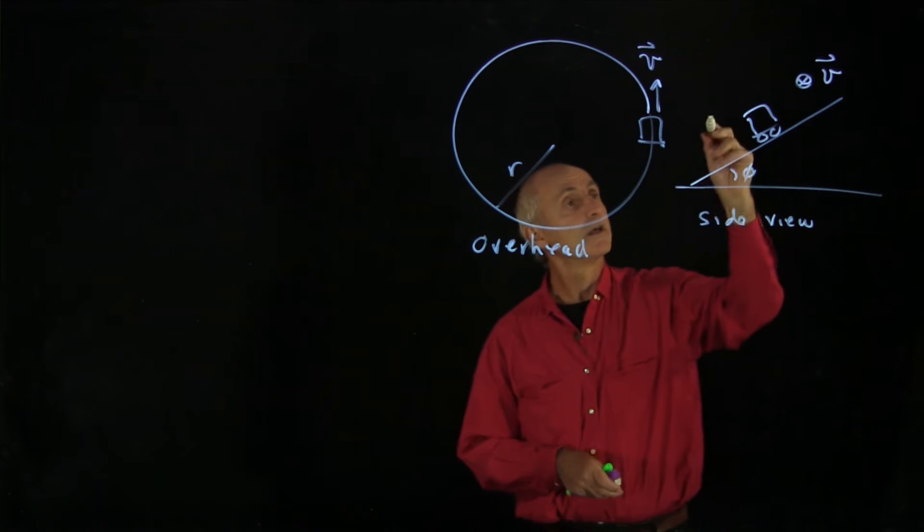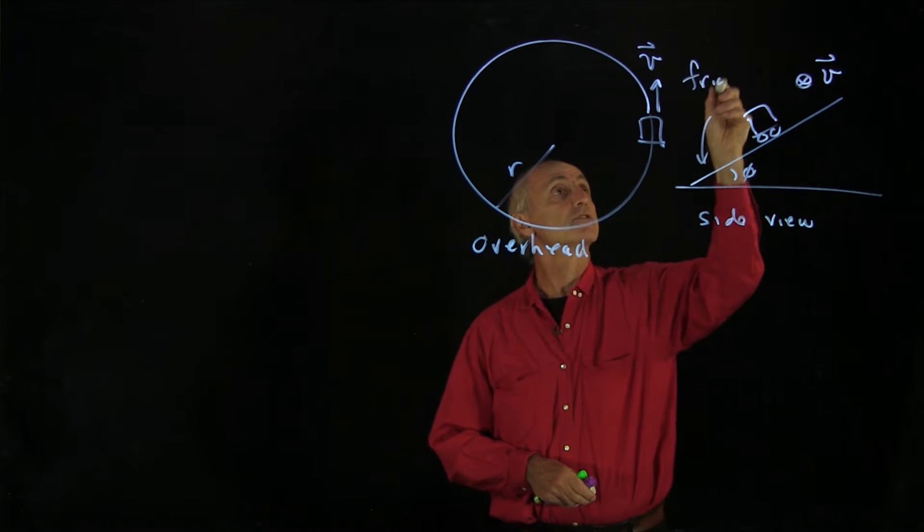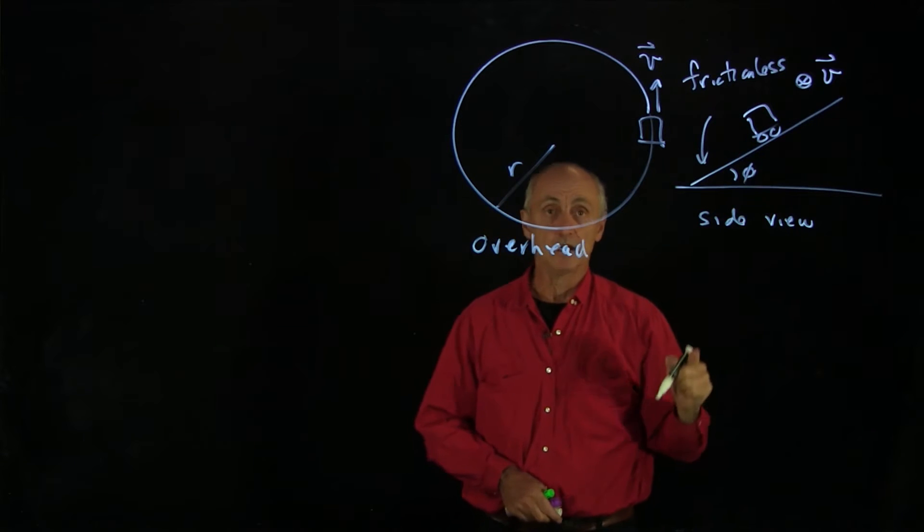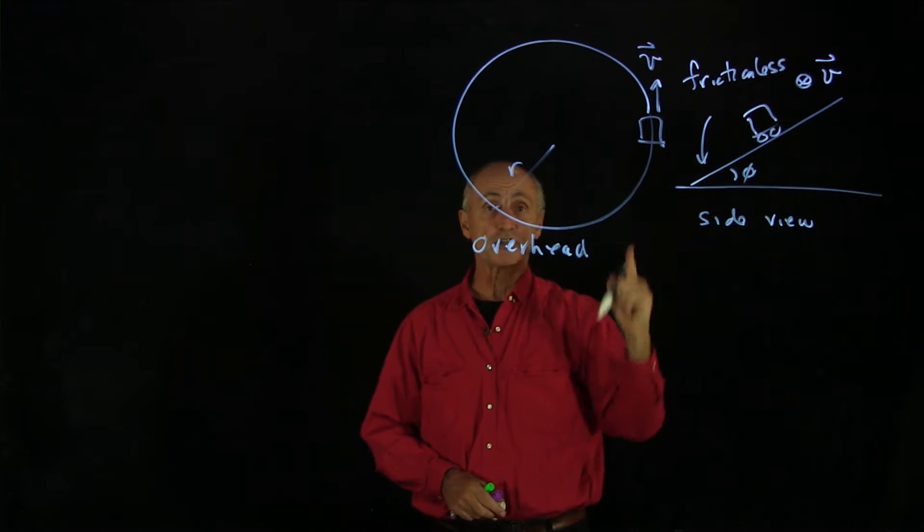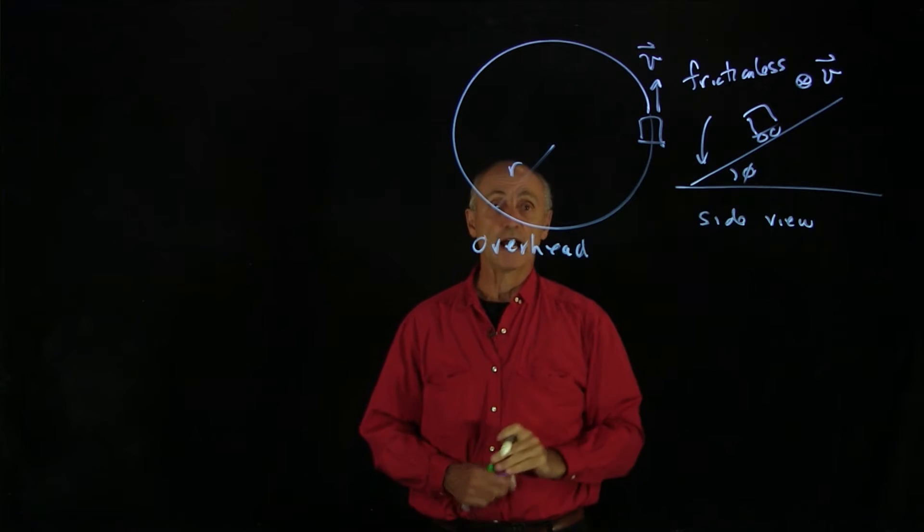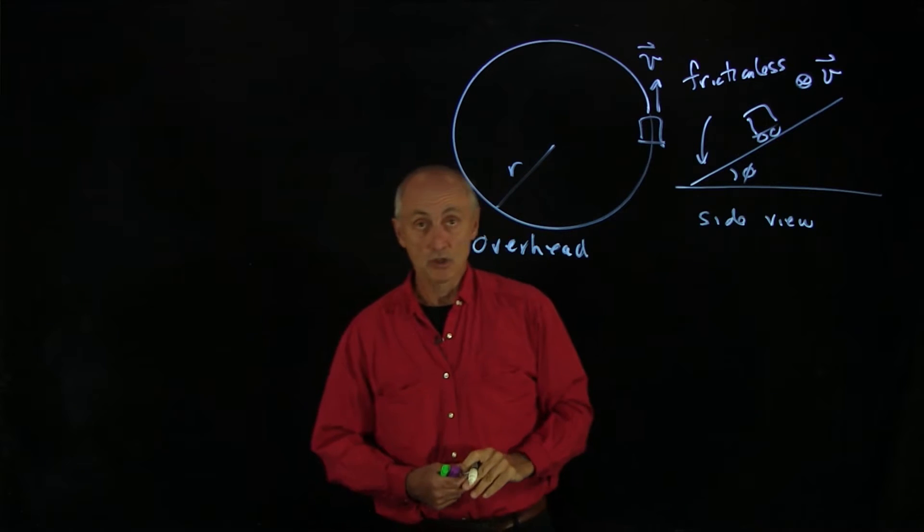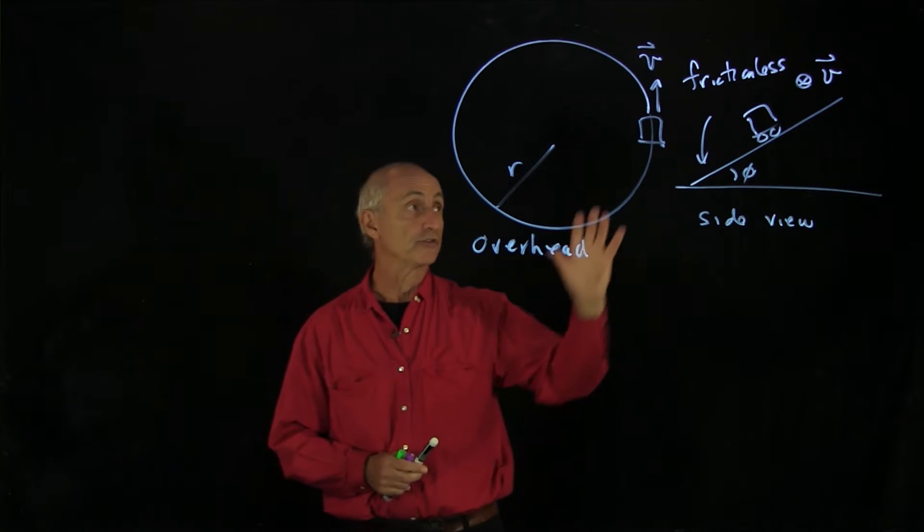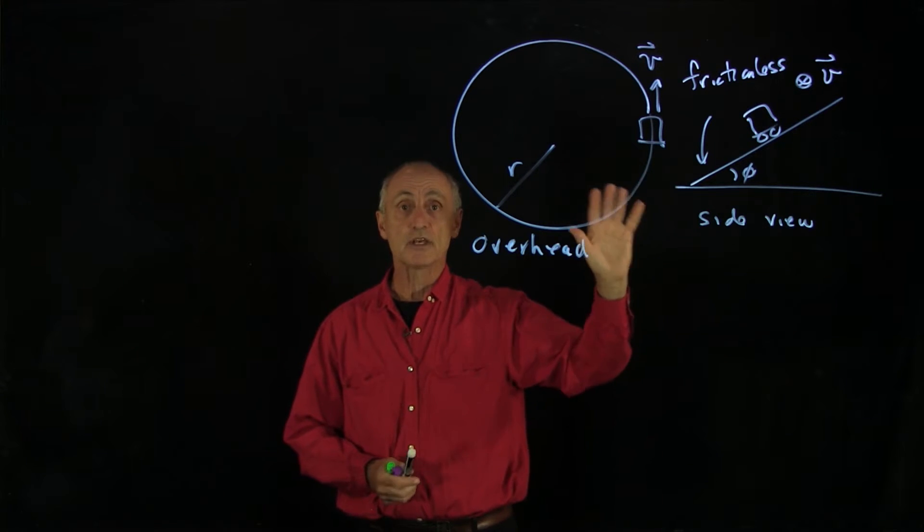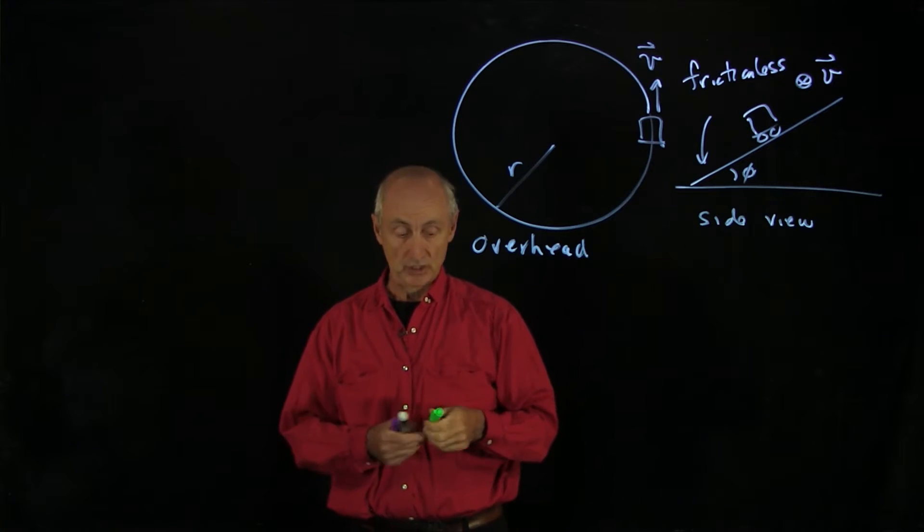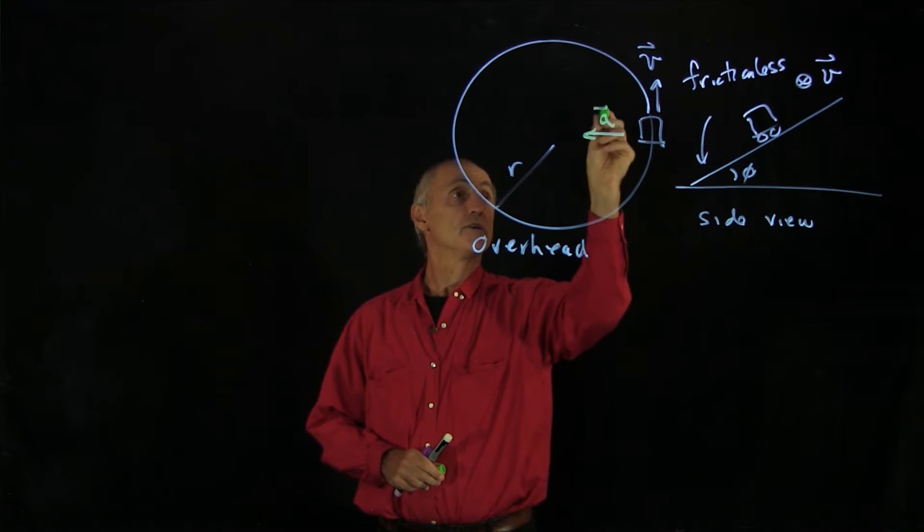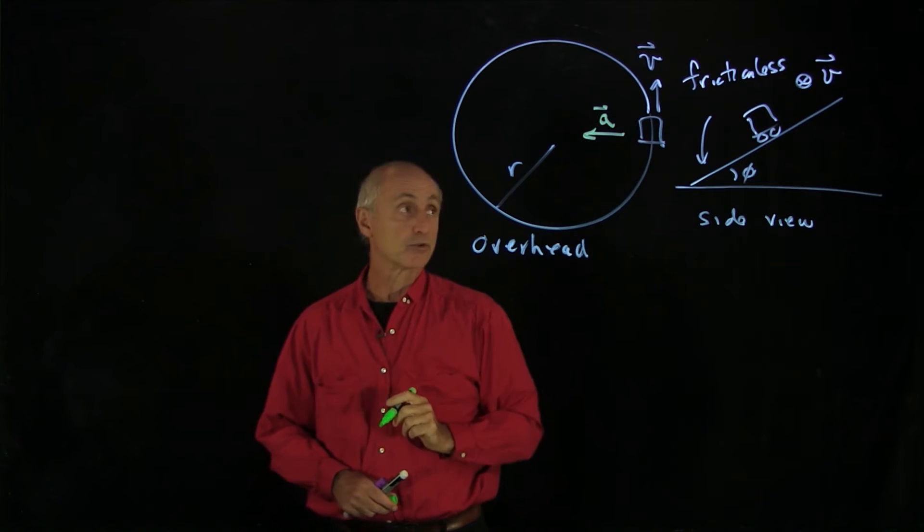This surface here is frictionless, and what we'd like to do is find out what speed the car can move such that it doesn't slide up or down the inclined plane. Our approach will be to apply Newton's second laws. What's very important to realize is this is circular motion, and for circular motion, we know that the car is accelerating towards the center of the circle.